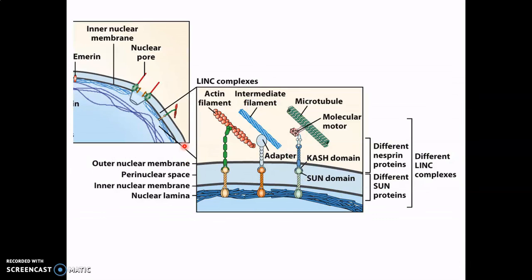Here's another version showing this in more detail. The inner membrane contains SUN proteins that are transmembrane and connected directly to the nuclear lamina. The KASH proteins, which all have a KASH domain that directly interacts with the SUN domain, are transmembrane on the outer membrane. We can see different varieties: one interacting with actin filaments, one with other intermediate filaments in the cytoplasm, and some interacting with microtubules. So this is a vast network tying all these pieces together.